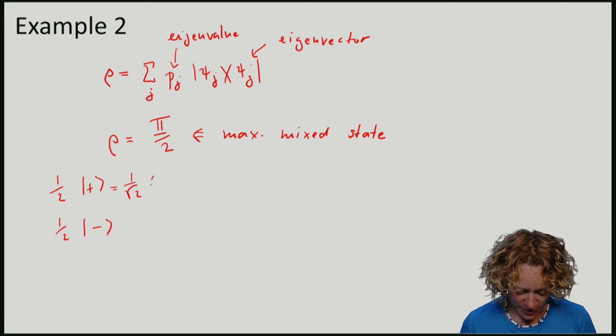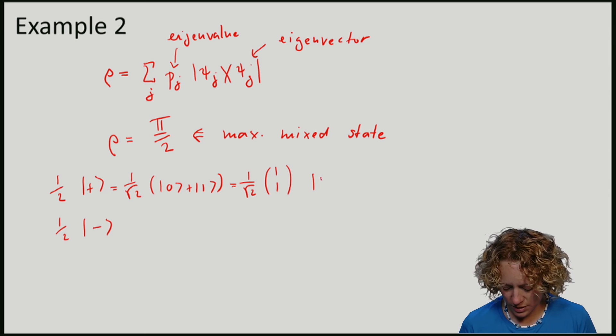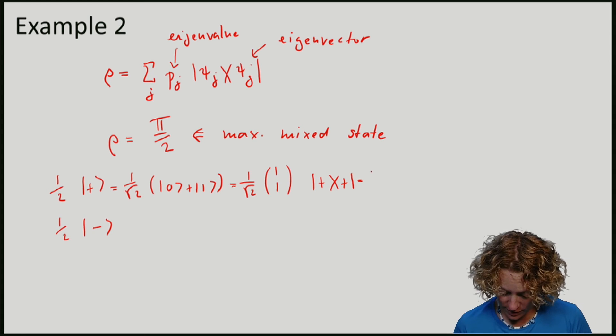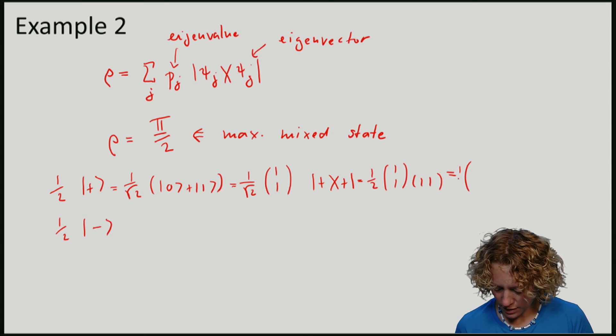Let's compute the resulting density matrix. We will start by computing the density matrix for these states individually. So |+⟩ is 1 over square root 2 times (1, 1). So the density matrix for plus, 1 over square root 2 times 1 over square root 2 is a half, which gives me a half times (1, 1, 1, 1).